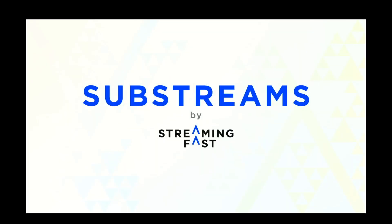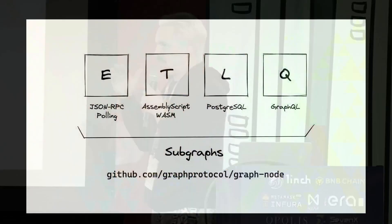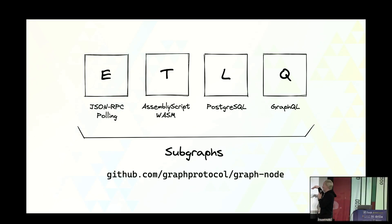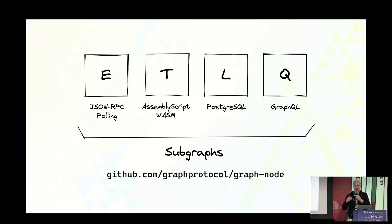Substreams is one of the big topics. The claim is that with Substreams you can have up to 100x indexing speed improvements. You can think about a subgraph as an ETLQ pipeline: Extract, Transform, Load, and then Query. Extraction works through JSON-RPC, transform is with the WebAssembly you write in the subgraph, you store the whole thing in a Postgres database, and query with GraphQL. It works today, but it's serial processing with bottlenecks.